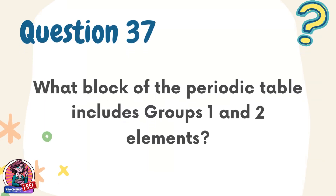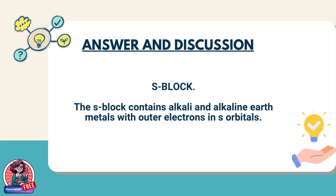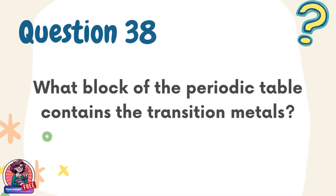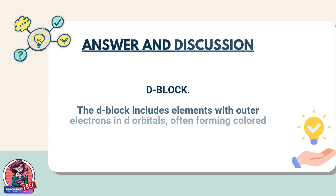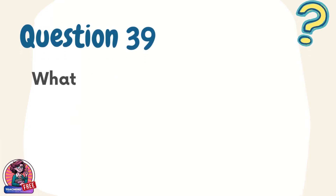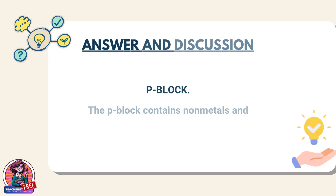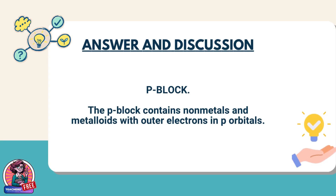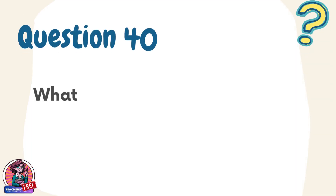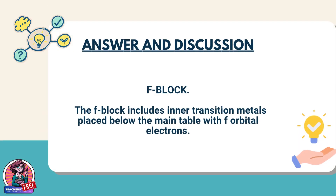Question 37. What block of the periodic table includes groups 1 and 2 elements? Answer: S block. The S block contains alkali and alkaline earth metals with outer electrons in S orbitals. Question 38. What block of the periodic table contains the transition metals? Answer: D block. The D block includes elements with outer electrons in D orbitals, often forming colored compounds. Question 39. What block of the periodic table includes elements such as halogens and noble gases? Answer: P block. The P block contains non-metals and metalloids with outer electrons in P orbitals. Question 40. What block of the periodic table includes lanthanides and actinides? Answer: F block. The F block includes inner transition metals placed below the main table with F orbital electrons.